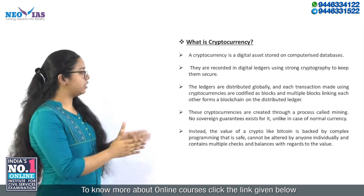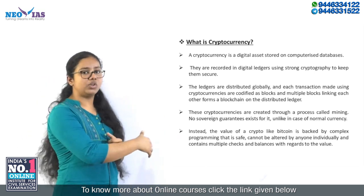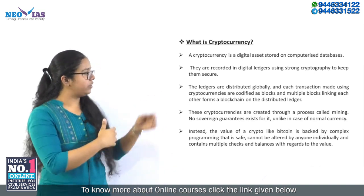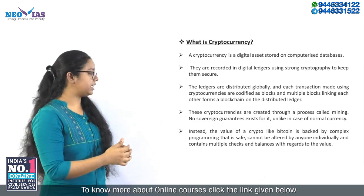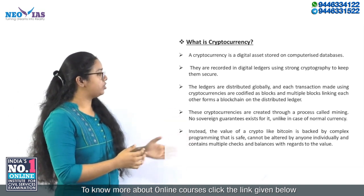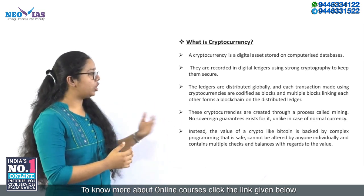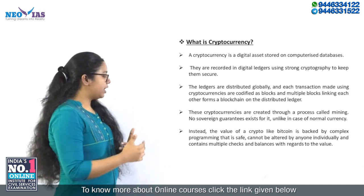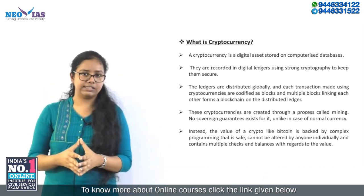There is no sovereign guarantee for cryptocurrencies, unlike the case of normal traditional currency. There is no centralized control over it — it is decentralized. Instead, the value of crypto like Bitcoin is backed by complex programming and it cannot be altered by anyone individually. So it is more secure and it contains multiple checks and balances with regard to its value.